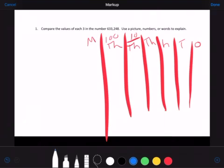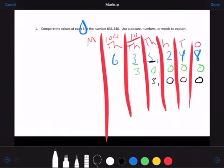So I would write this number 633,248 into the place value chart. And it's asking me to compare the threes. So I'm going to take the 3 in the ten thousands place and really look at it. Well, its value is 30,000. Then if I look at the 3 in the thousands place, its value is 3,000. When you look at this, you can tell that these two threes are not equal. The 3 that makes 30,000 is much larger than the 3 that makes 3,000.